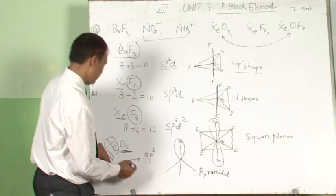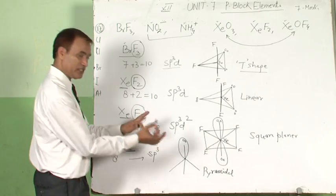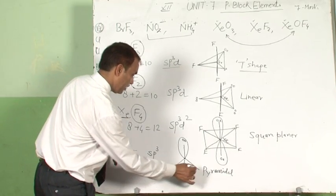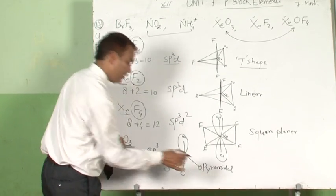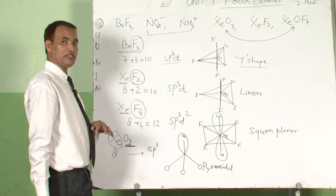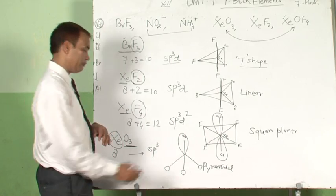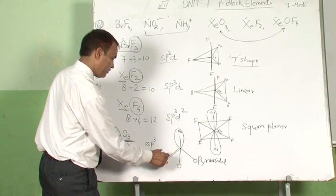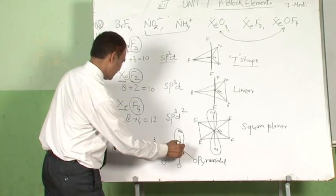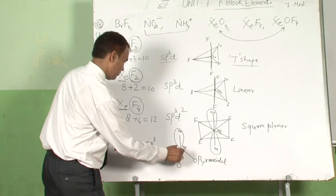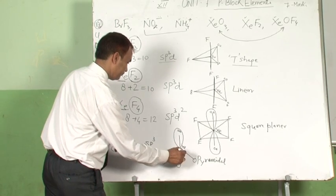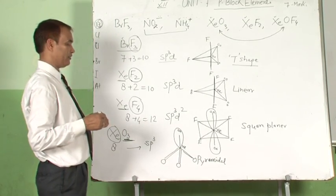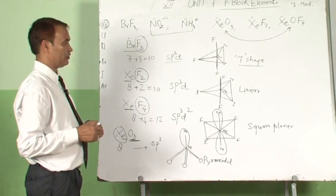And if there is oxygen as a bonding atom, put the oxygen. If there is no charge on the oxygen atom, then there will be a double bond with the central atom — it will be doubly bonded. This is the shape of XeO3.